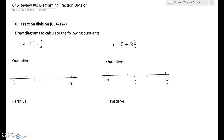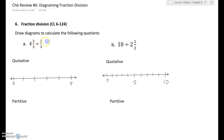This review problem is about fraction division and diagramming it. I'm going to do both problems quotatively and partitively. Quotatively means breaking it up into pieces of two-thirds, and partitively means: can I put four and two-thirds into two-thirds of a group?